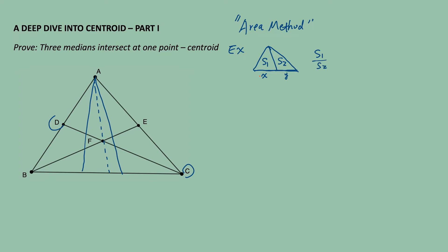Many of you can notice that these two small triangles have a common altitude — from this vertex to the bottom side. Let's say the length of the altitude is h. According to the area formula of a triangle, S1 is equal to one-half times x times h, and S2 is equal to one-half times y times h. Therefore, the one-halves cancel and h cancels, so the area ratio is the base ratio of the two triangles: x over y.